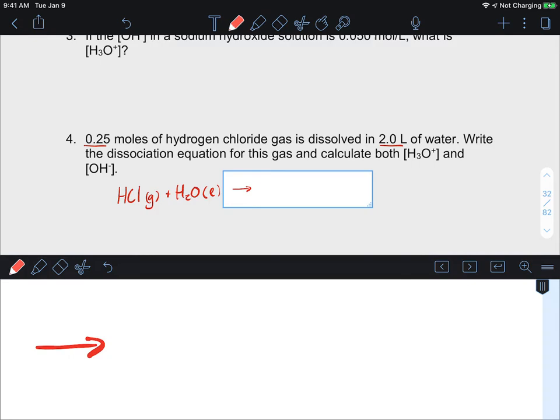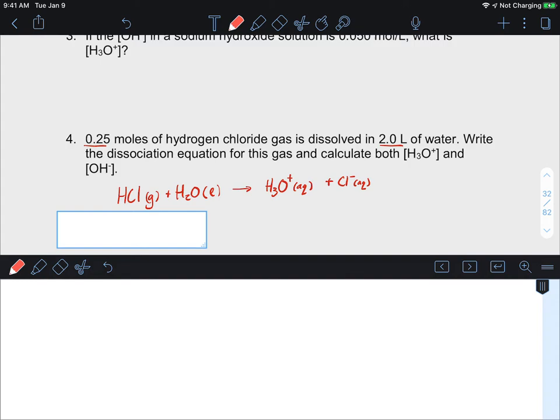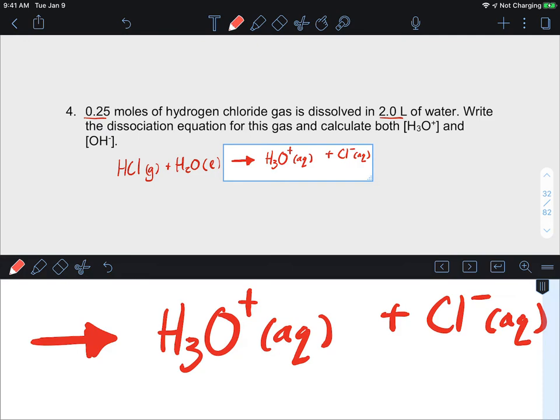Write the dissociation equation of the gas. So HCl gas plus H2O liquid, and we're going to get a dissociation where we get H3O plus that is aqueous plus Cl minus and that is aqueous. So that's the reaction of this acid with water.